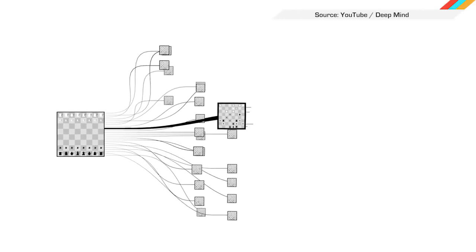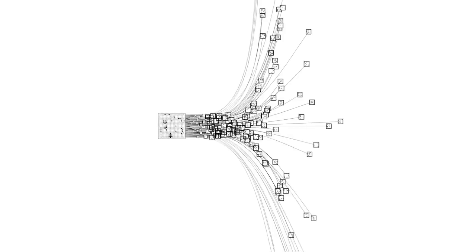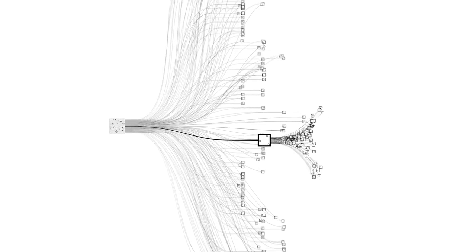Go is one of the most complicated board games around. Where chess has about 20 possible moves for each piece, Go has about 200. And that's why artificial intelligence could not crack it until Google's deep learning division stepped in.